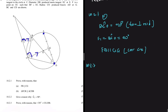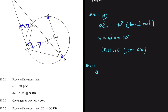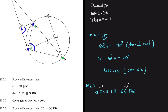Now let's do Question 10.2.2, which says: prove that triangle FCB is similar to triangle CDB. Let's highlight both triangles so we can see what we're talking about. We have triangle FCB and triangle CDB, and we're going to prove similarity using angle-angle-angle. When they name the triangles, angle F in FCB should equal angle C in CDB — so this angle here should equal this angle right here. Let's see how we can prove that using the diameter.